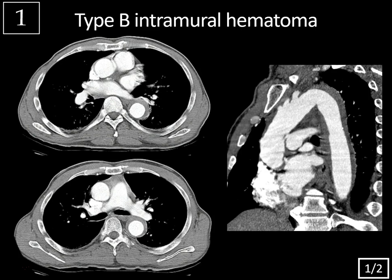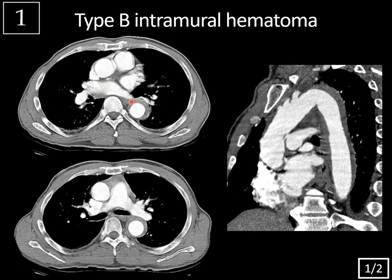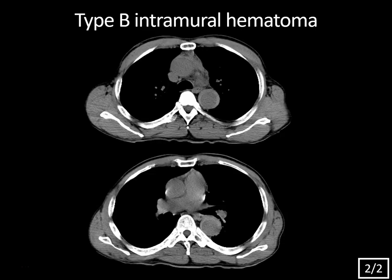This would be a type B intramural hematoma because it's distal to the brachiocephalic artery. Non-contrast images are extremely helpful when evaluating for intramural hematoma because you can see more clearly the hyperdense hemorrhage within the wall of the aorta. In this case, there's also some mediastinal hemorrhage, which is a potential complication. On contrast images, the hemorrhage within the wall appears hypodense relative to the extremely bright contrast in the lumen, which is why the non-contrast images are helpful.